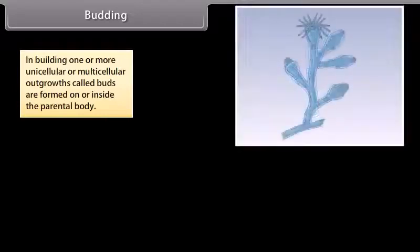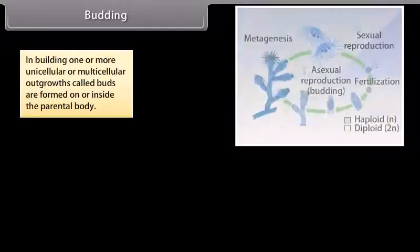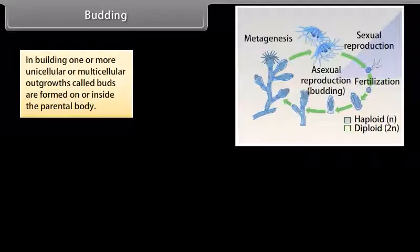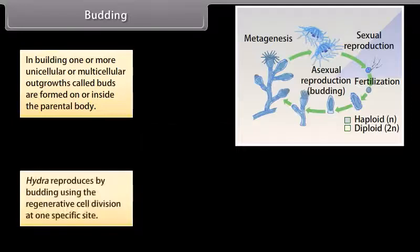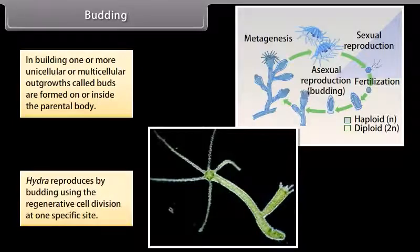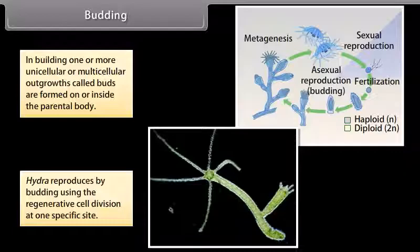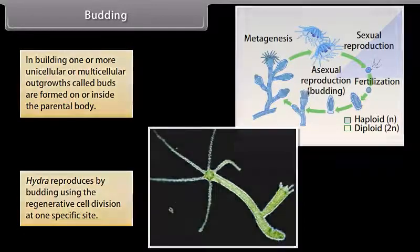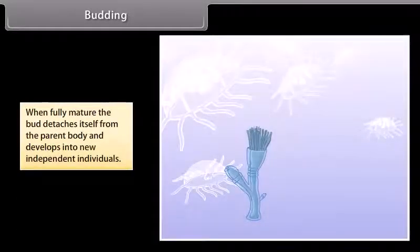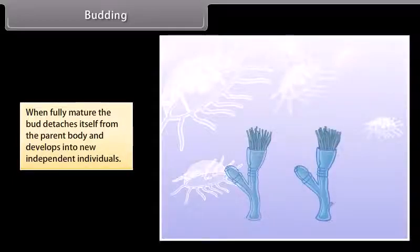In budding, one or more unicellular or multicellular outgrowths called buds are formed on or inside the parental body. Hydra reproduces by budding using regenerative cell division at one specific site. When fully mature, the bud detaches itself from the parent body and develops into a new independent individual.